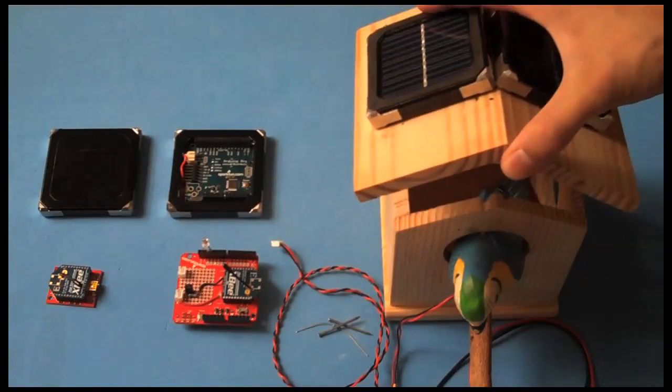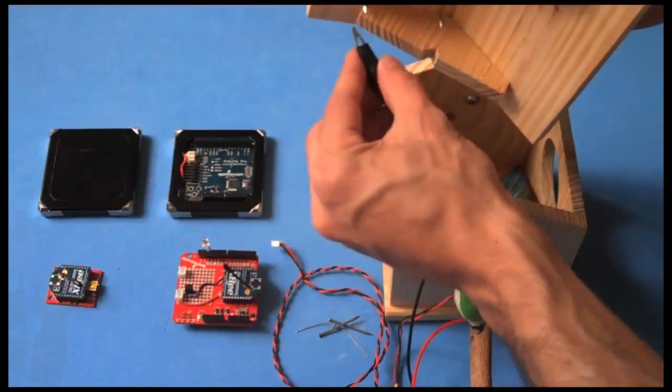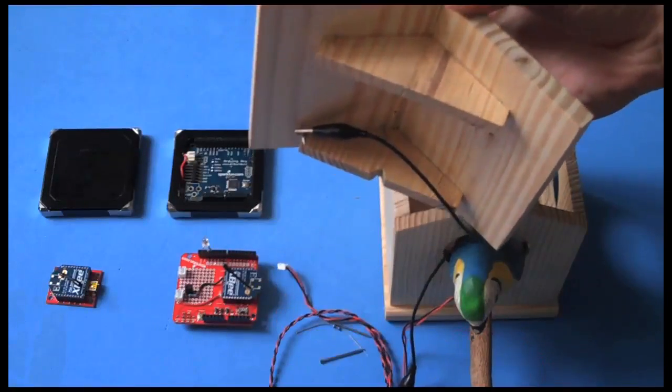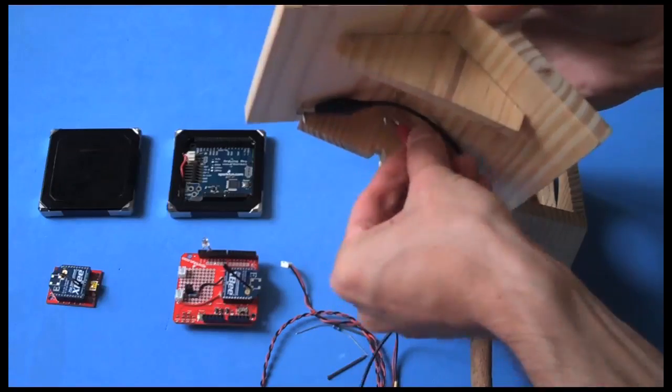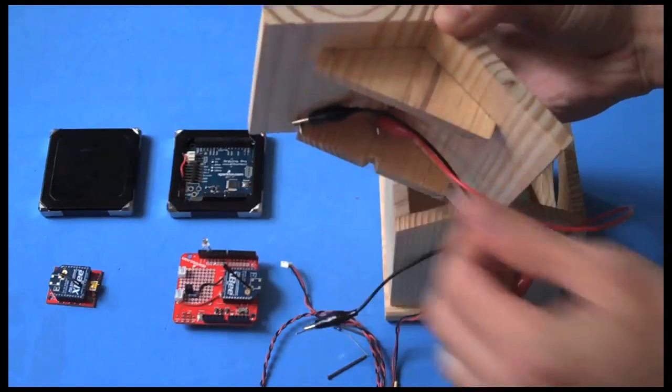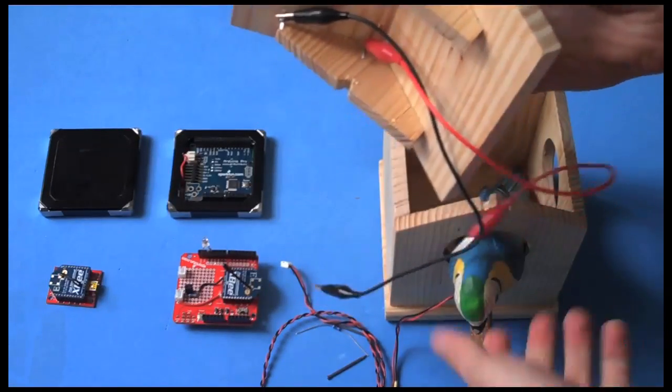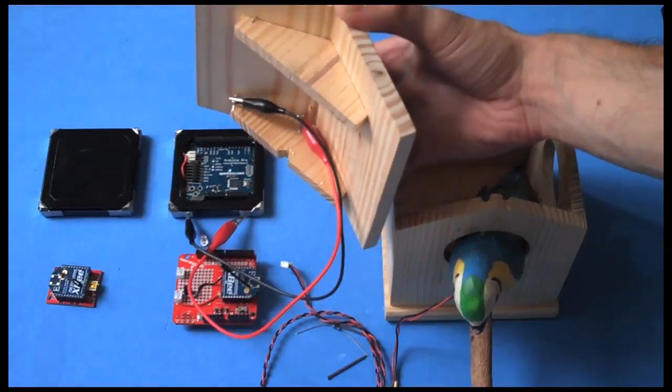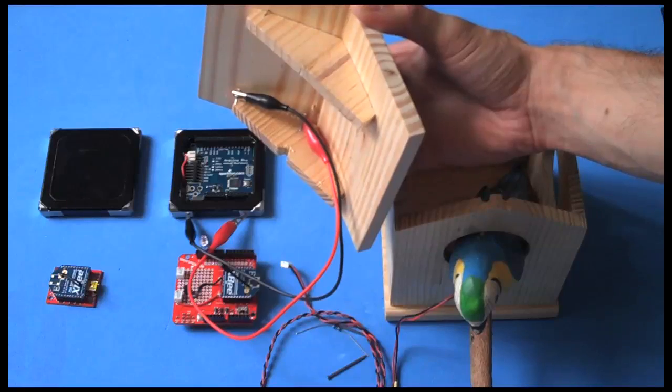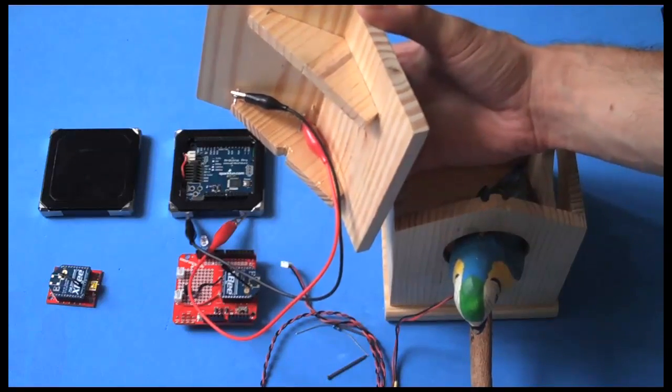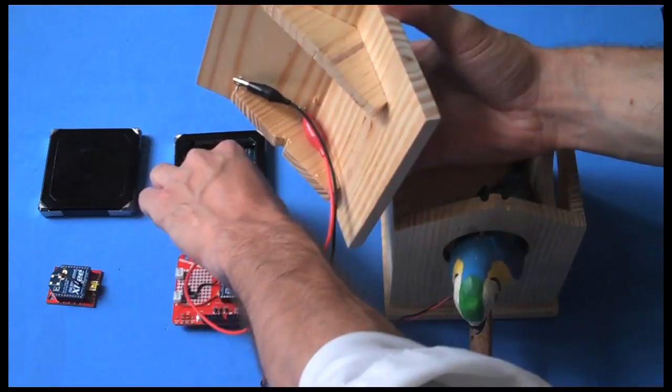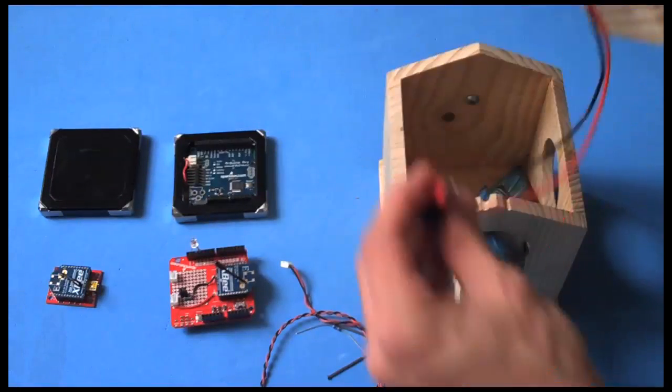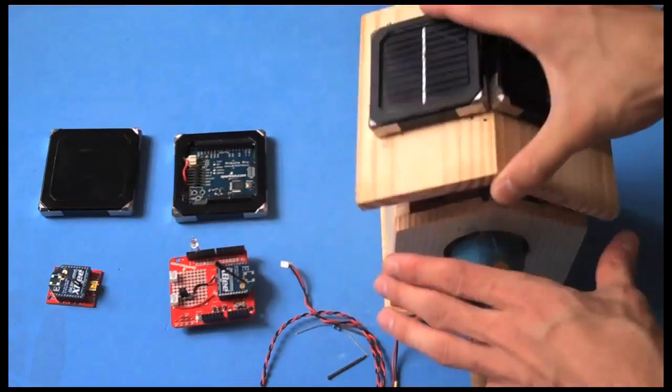Basically then, you add your alligator clips like so. And the other side of these alligator clips will basically magnetically attach to either your Arduino square or your rechargeable battery square. You can directly power this entire system without the battery square, but if you want it to work at night, it's best to have it.